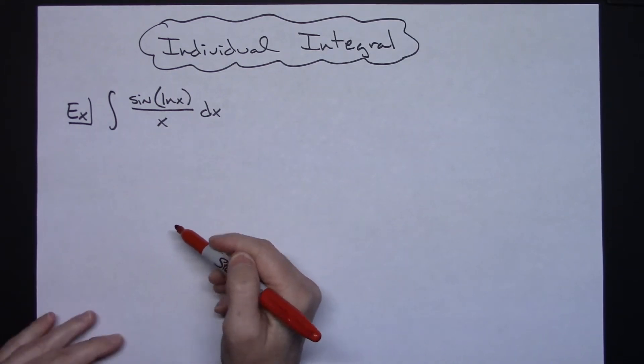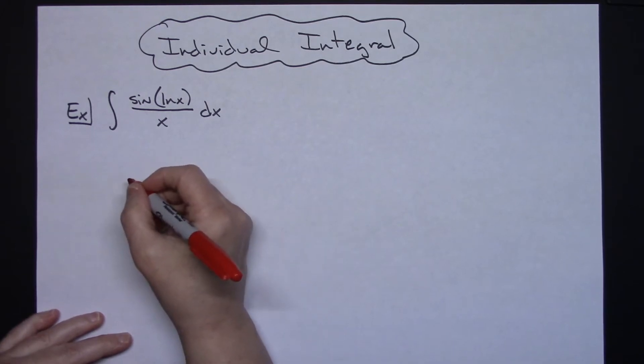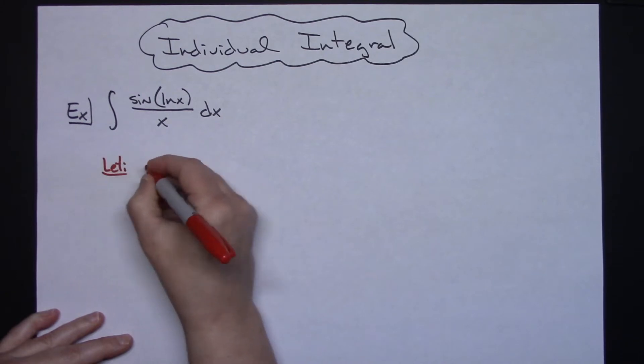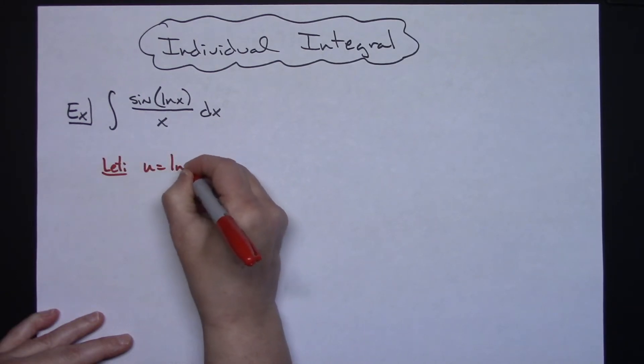This is going to be a straightforward u substitution, so we're going to start by letting our u be natural log of x. So we're going to let u equal natural log of x.